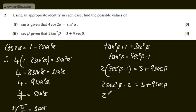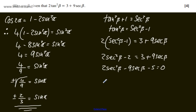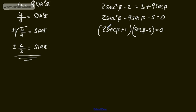Rearranging: 2sec²β minus 9sec β minus 5 equals 0. It looks like I can factor that. We have 2sec β plus 1 multiplied by sec β minus 5, and that equals 0. Let's check: 2sec²β minus 10sec β plus sec β minus 5. We need to be careful with this.